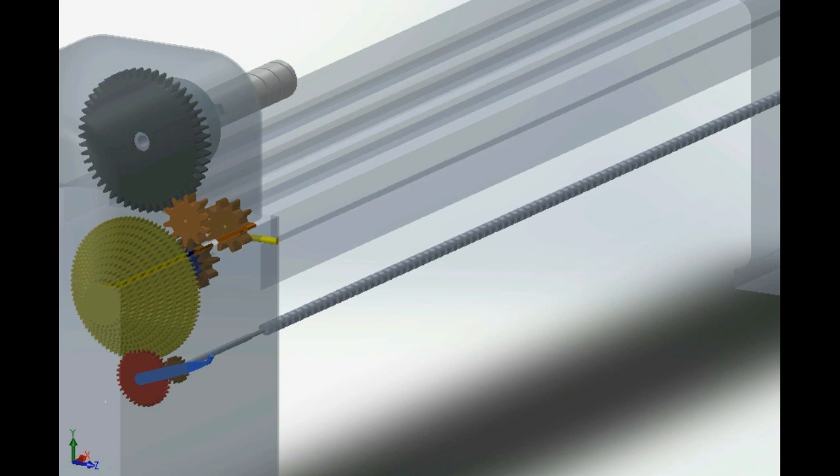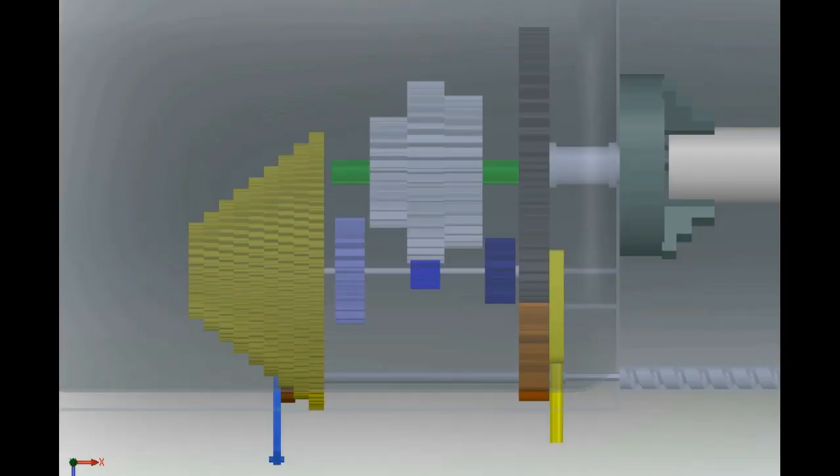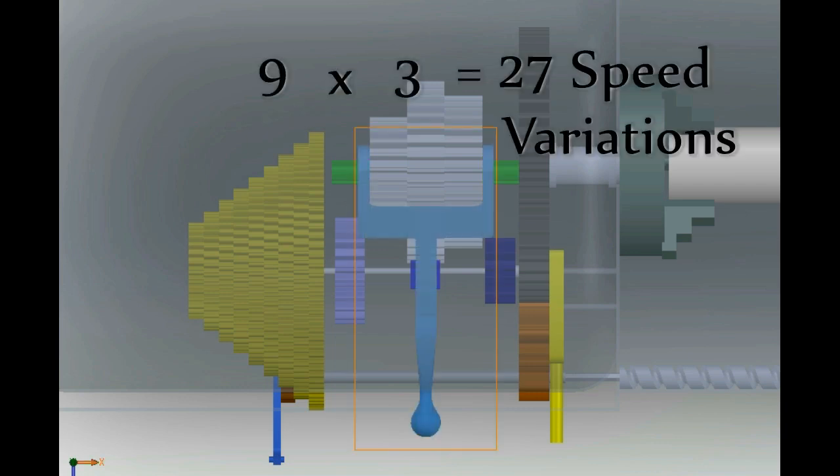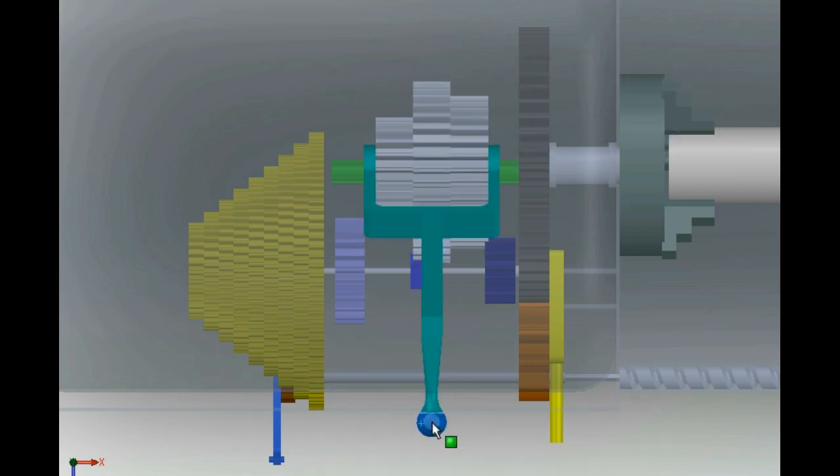In this stage there are nine possible speed ratios. Thus the total Norton mechanism offers a total of 27 speed variations which can be used to obtain different pitches of the thread being cut.